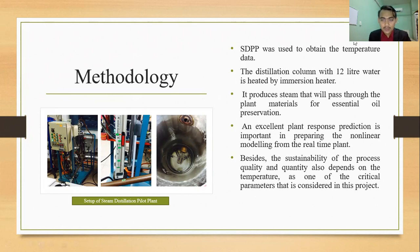SDPP was used to obtain the temperature data. The distillation column with 12 liters is heated by immersion heater. It produces steam that will pass through the plant material for essential oil preservation.